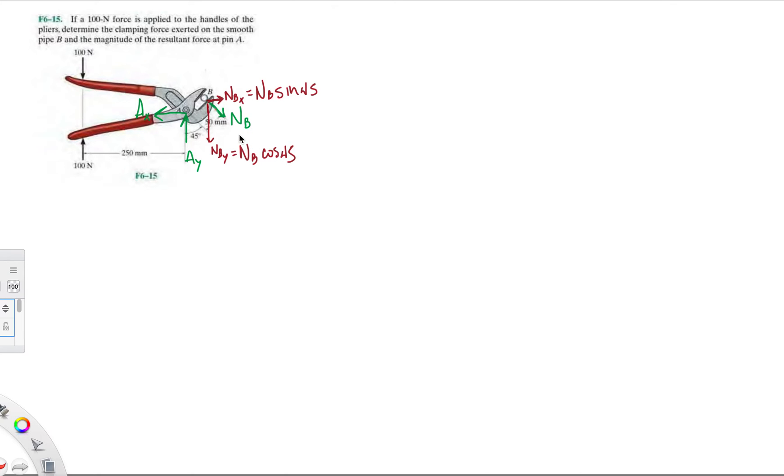Now all our forces are in the X direction and the Y direction. We use our static equilibrium equations because we're doing statics. In the X direction: minus AX plus NB sine 45 equals zero. Then we do the ΣFY: AY minus 100 minus NB cosine 45 equals zero.